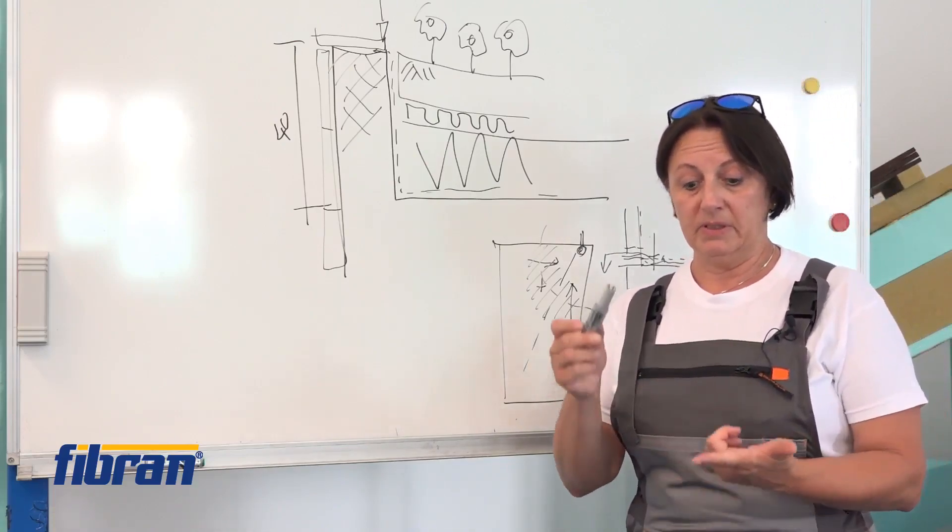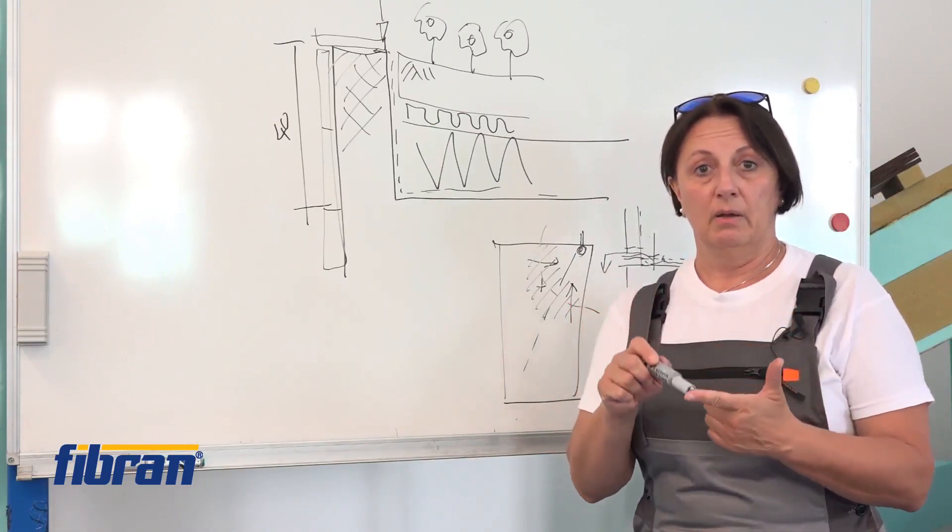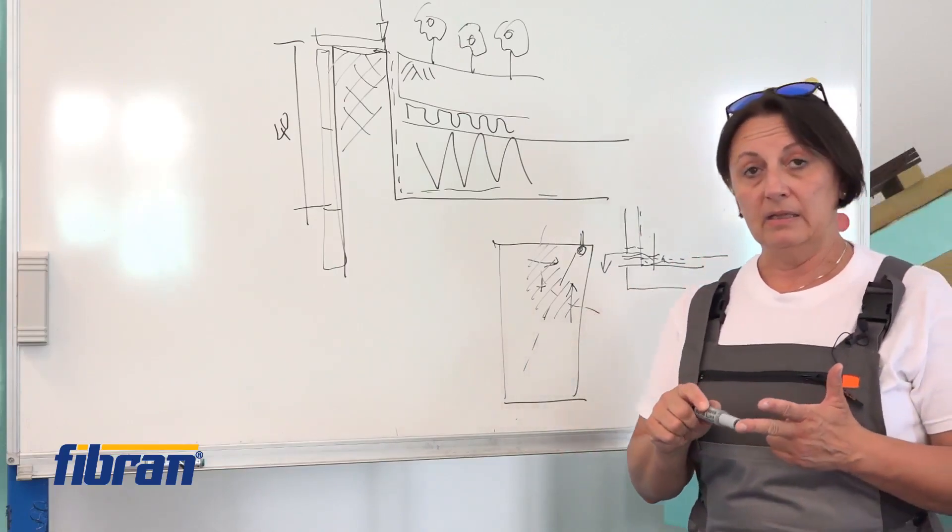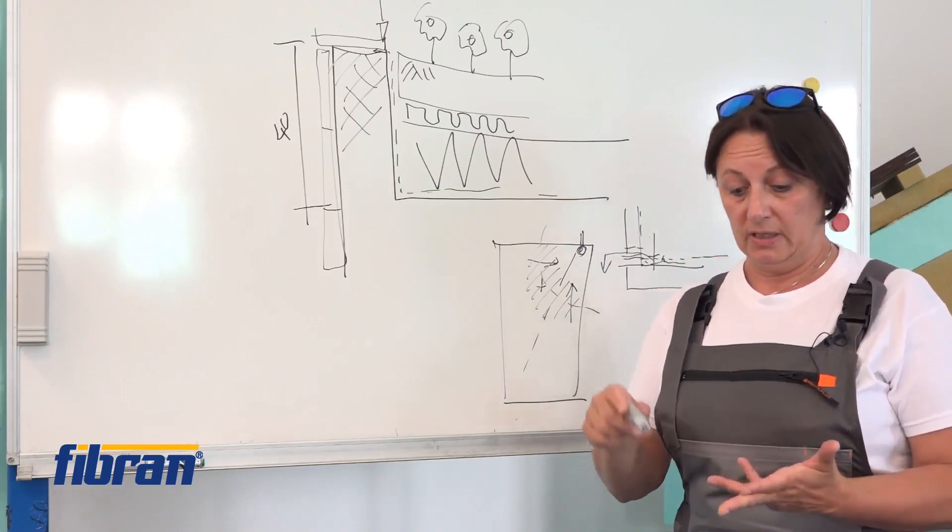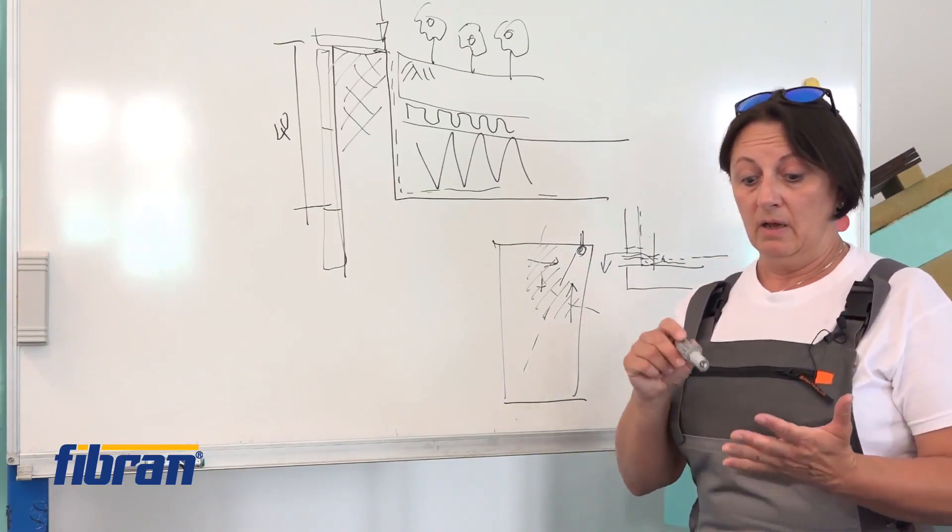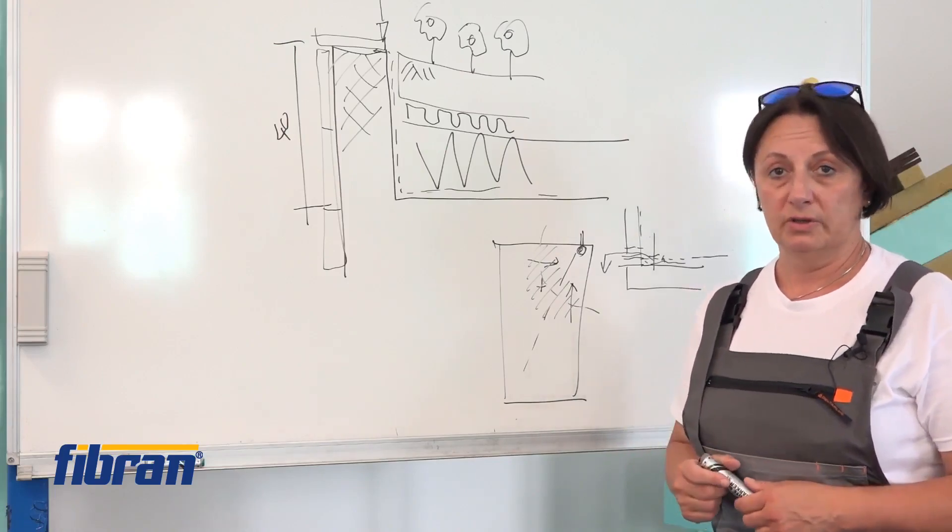We are refurbishing the waterproofing by adding a vapor control layer, inclination done with XPS boards, and two new layers of bituminous membrane, on top of which we shall return the originally planned green roof.